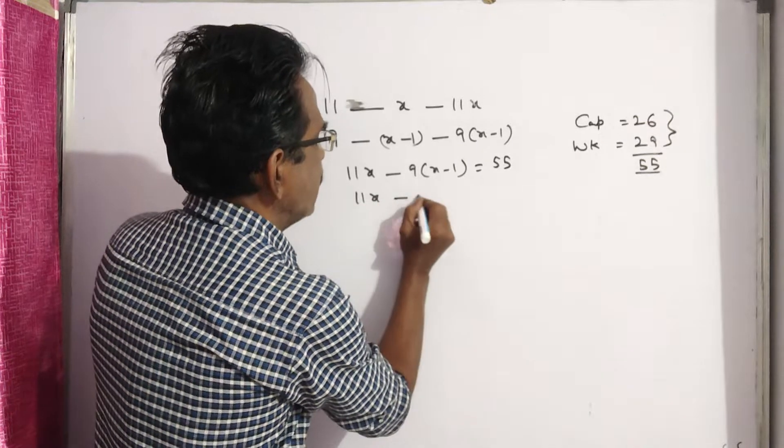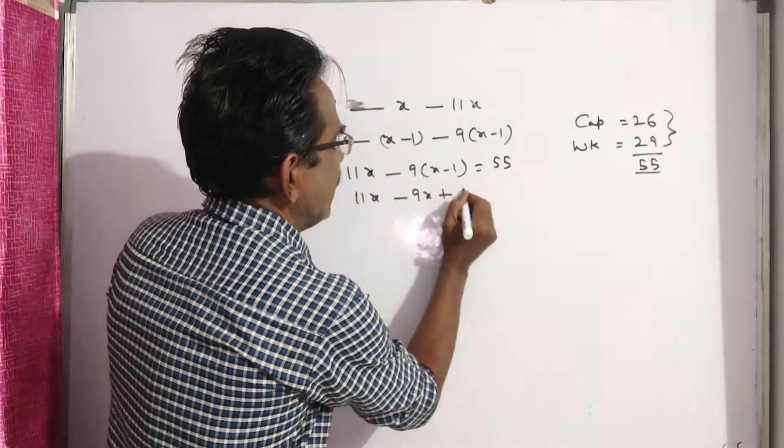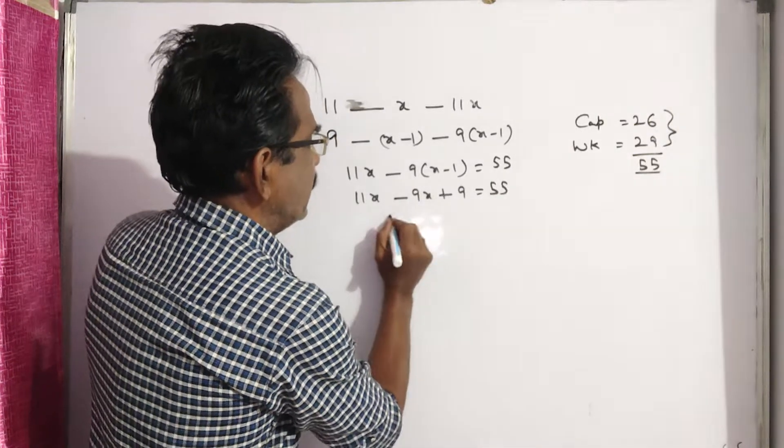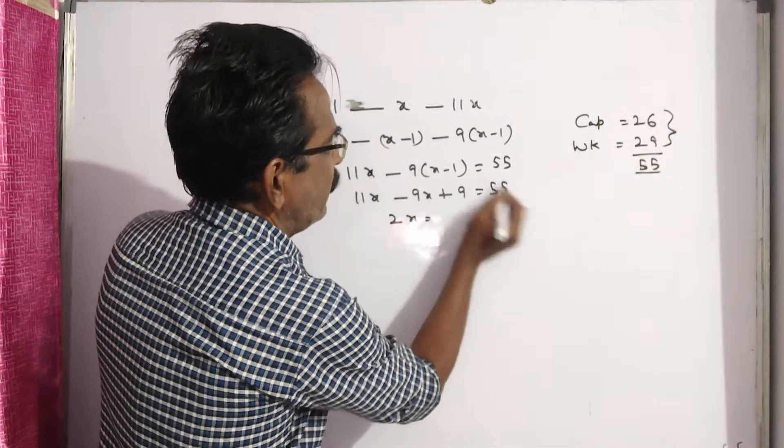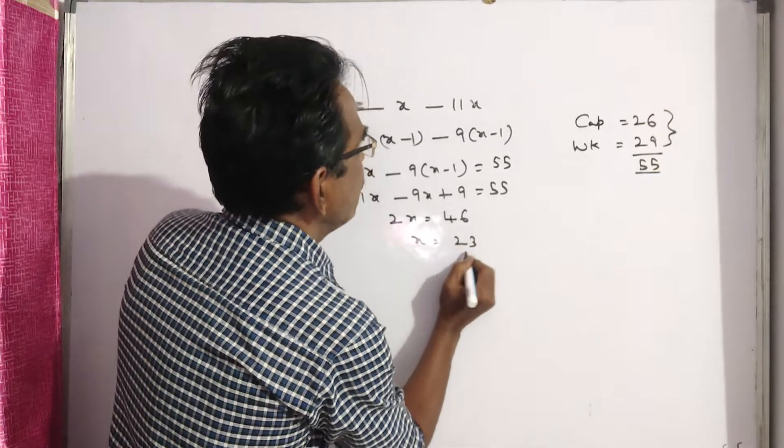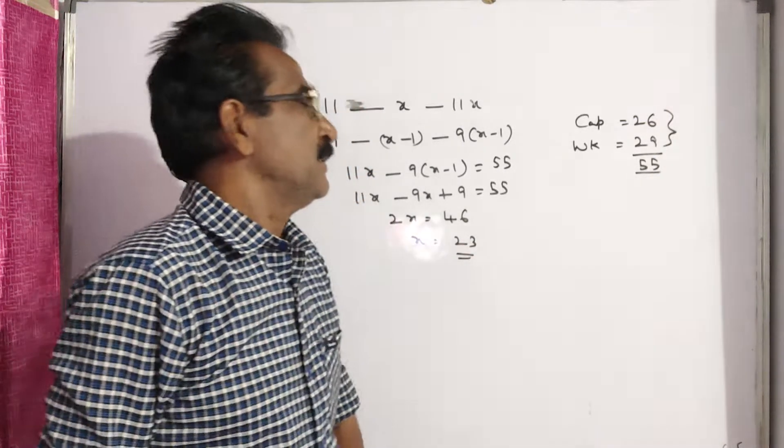11X minus 9X plus 9 is equal to 55. 11X minus 9X, 2X is equal to 55 minus 9 is 46. X is equal to 23.